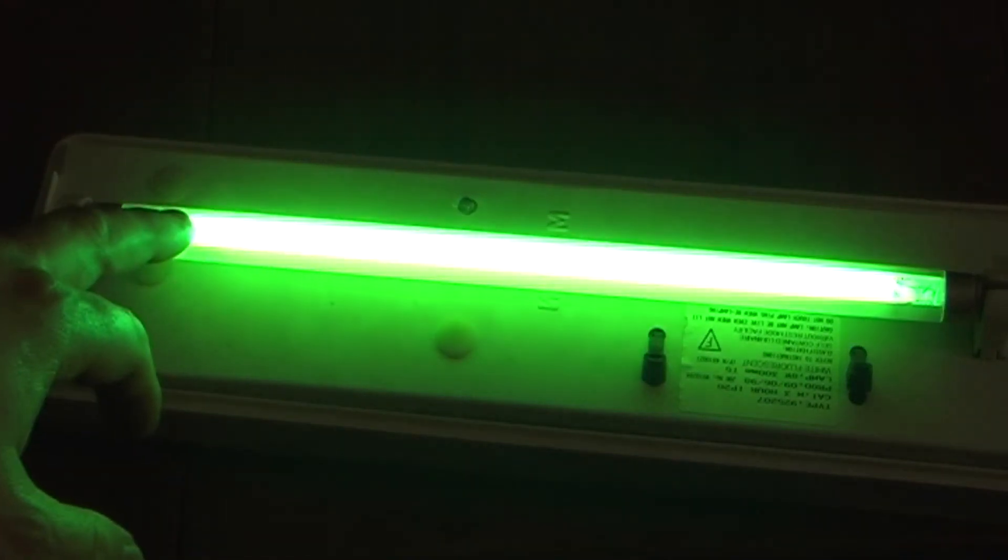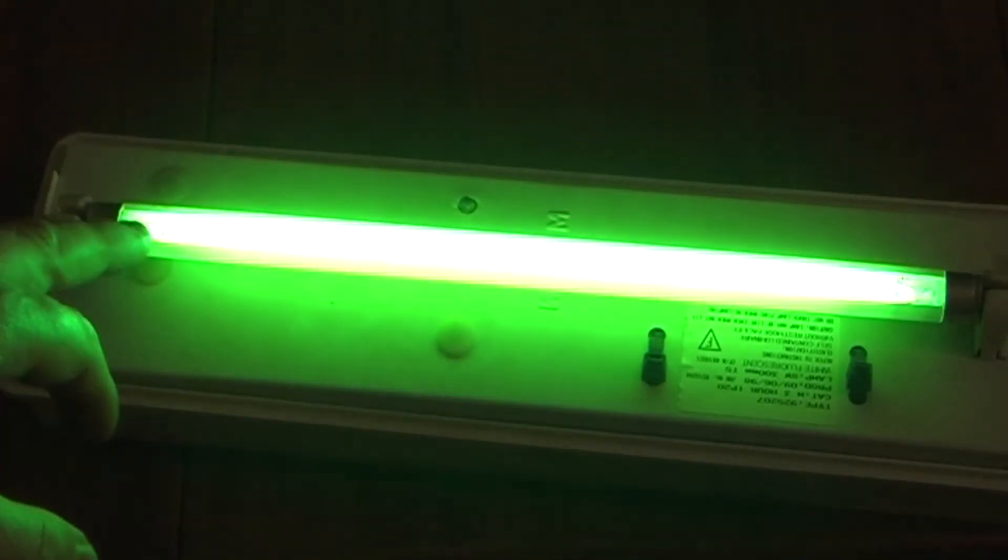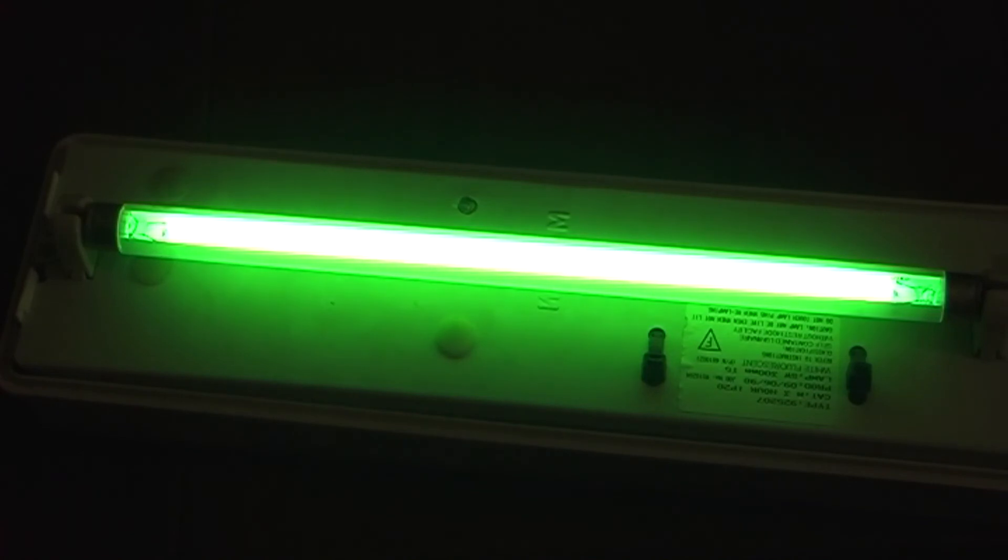Bit of a crap video, to be honest. But at least you can see what's actually inside the strip light and how it functions. You can see there's no visible light coming directly from the gas. It's all been converted by the fluorescent coating.